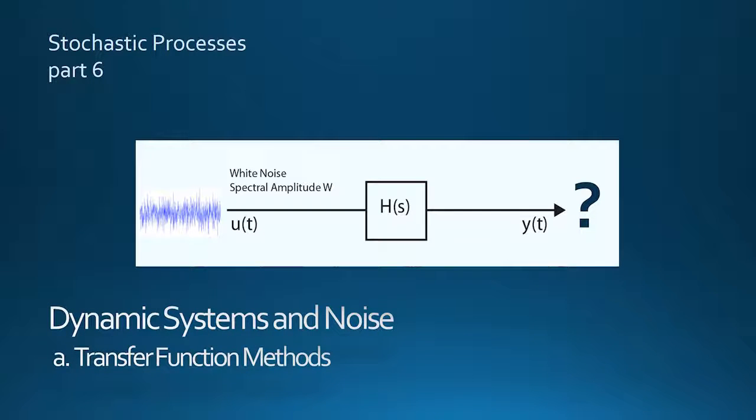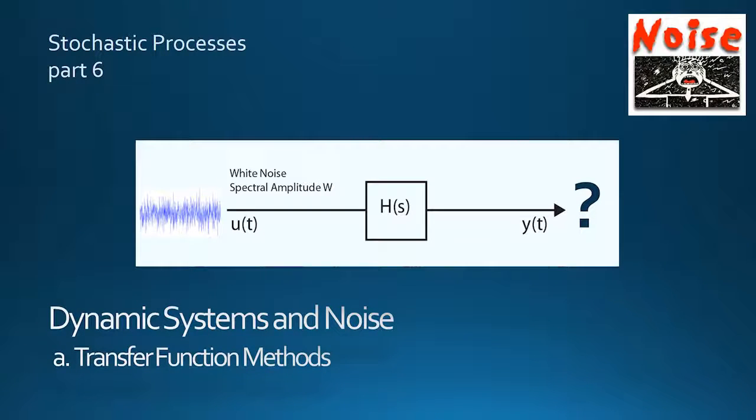Hi. This is the first half of the much-delayed part 6 of my sequence on stochastic processes. It's about the response of dynamic systems to noise, and in the development of the variance equation in the second half, it also provides some of the background to the Kalman filter.